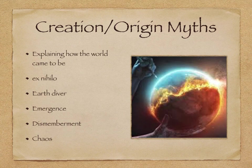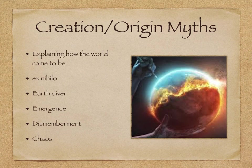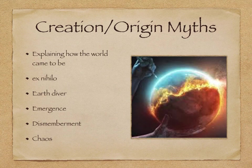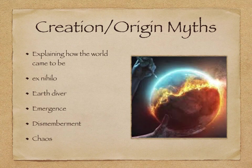Now we can look at different origin stories or creation myths, and we're going to have different mythologists — those who study myths — who've applied different categories to classify these creation stories. I like this system because it divides them into five main categories. The first is what's called ex nihilo, which literally means from nothing. This is where creation is through the thought, word, dream, or bodily secretions of a divine being — literally the divine being creates the world from nothing. Think about your three monotheistic religions: in Catholicism we have Genesis, which tells you the story of God literally creating the world, and this is out of nothing, our world being created.